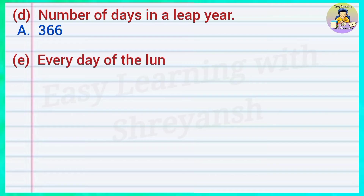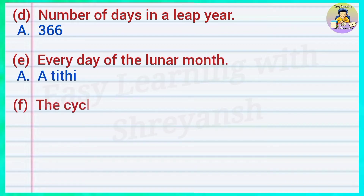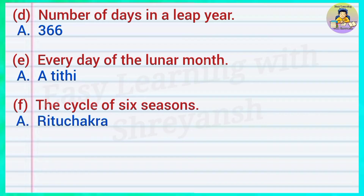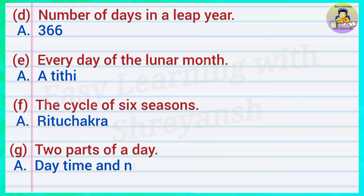E — every day of the lunar month — answer: a tithi. F — the cycle of six seasons — answer: ritu chakra. G — two parts of a day — answer: daytime and nighttime.